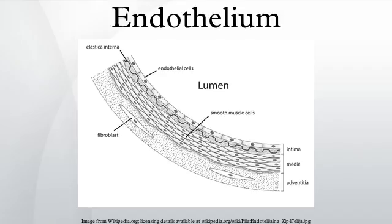Terminology: the foundational model of anatomy makes a distinction between endothelial cells and epithelial cells on the basis of which tissues they develop from, and states that the presence of vimentin rather than keratin filaments separates these from epithelial cells. Many consider the endothelium a specialized epithelial tissue.